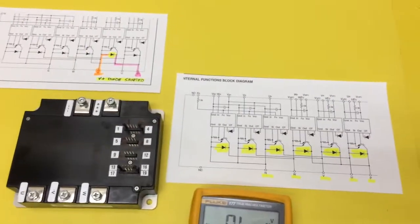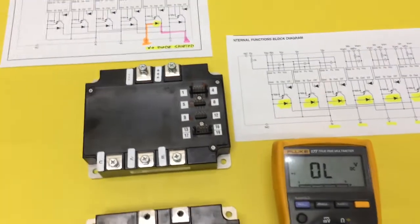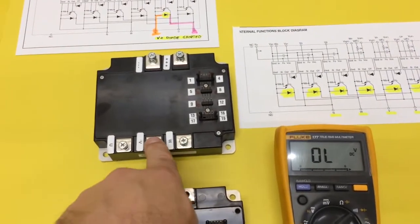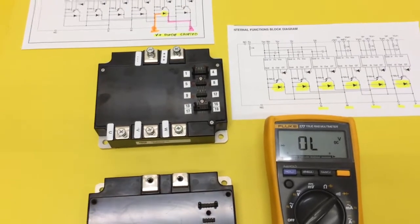So without having a schematic and without even having to memorize which way to put your meter leads, you can detect the bad one. Just the odd one out.